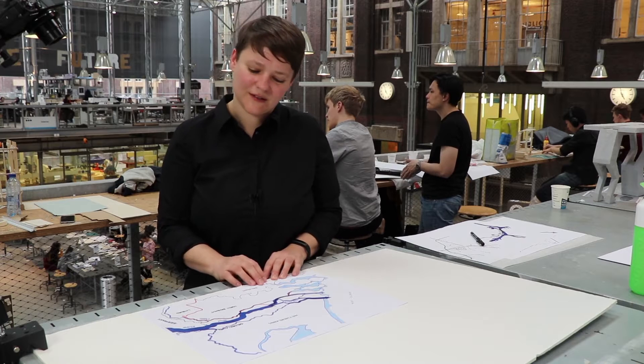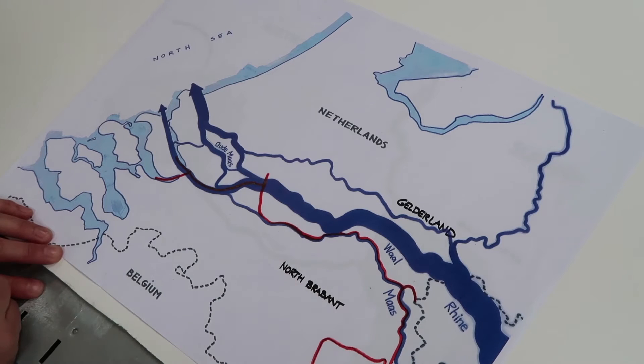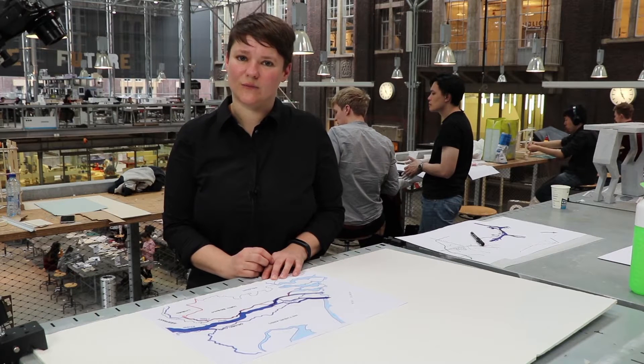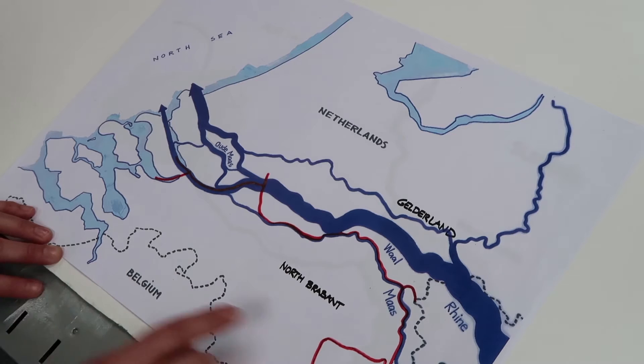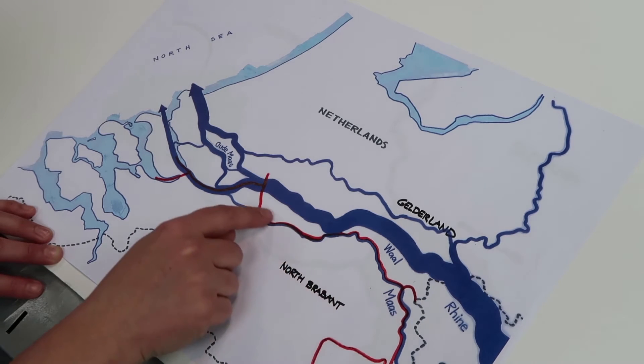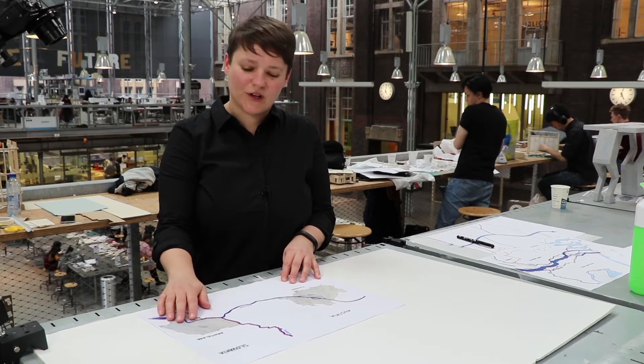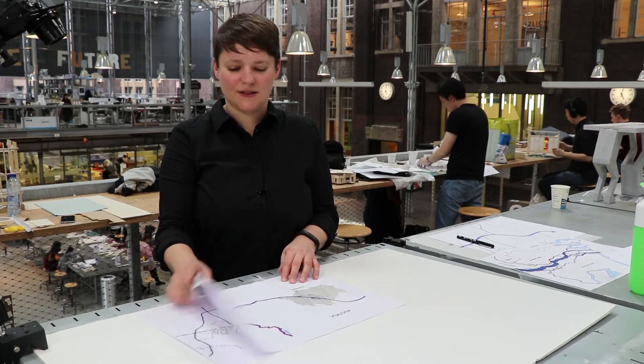Looking at this example, we can see the red line, which represents the border between two provinces of the Netherlands, Gelderland and North Brabant, is actually partially built of the Maas. Large-scale infrastructures, like rivers, are actually systems.